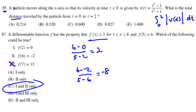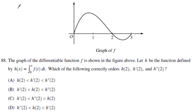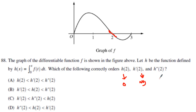Number 88 — the last problem. Here is the graph of f of x, and h is defined by the Fundamental Theorem of Calculus. We know h of 2 is equal to 0. h prime of 2, the derivative, is equal to a negative value. And the second derivative is going to be an even more negative value, which means we are left with E as our answer.